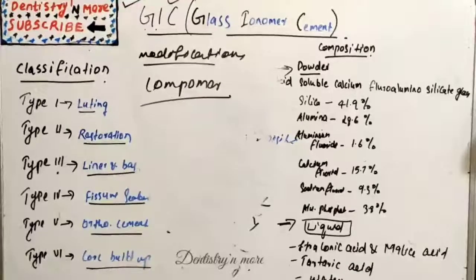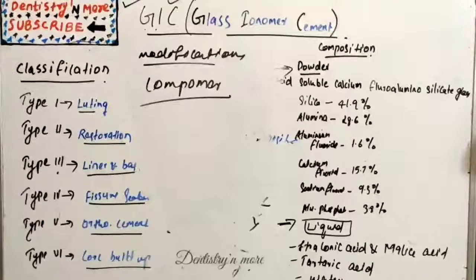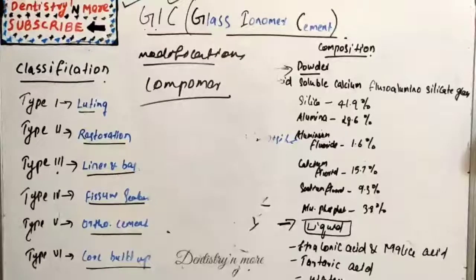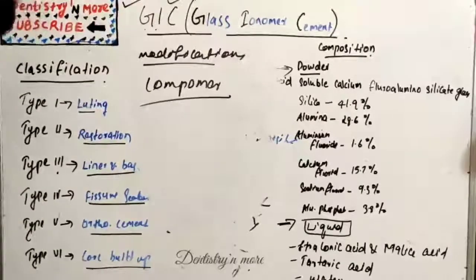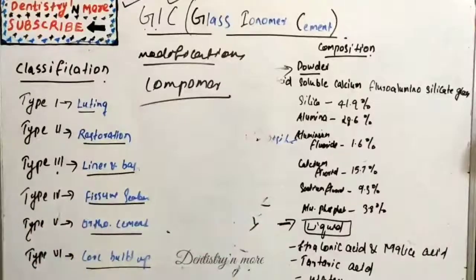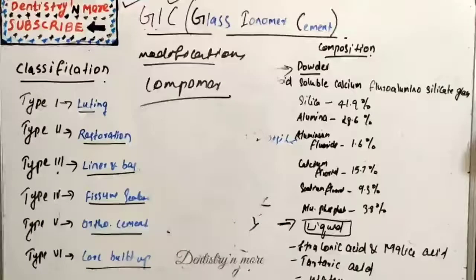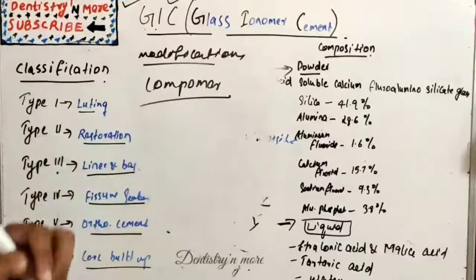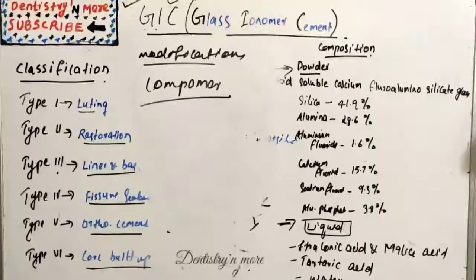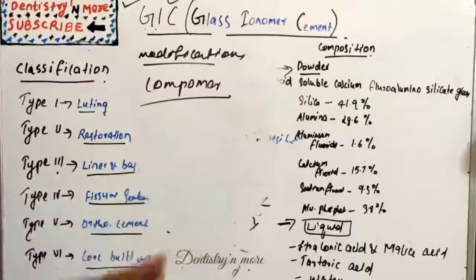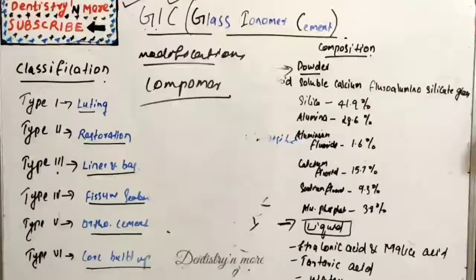So that is all about GIC, Glass Ionomer Cement. We learned its classification, its composition, setting reaction, manipulation, advantages, disadvantages, modification, and also sandwich technique. Sandwich technique can be asked as a short note. Hope you understood this very basic topic. I'll come up with a new topic in conservative dentistry. Thank you.